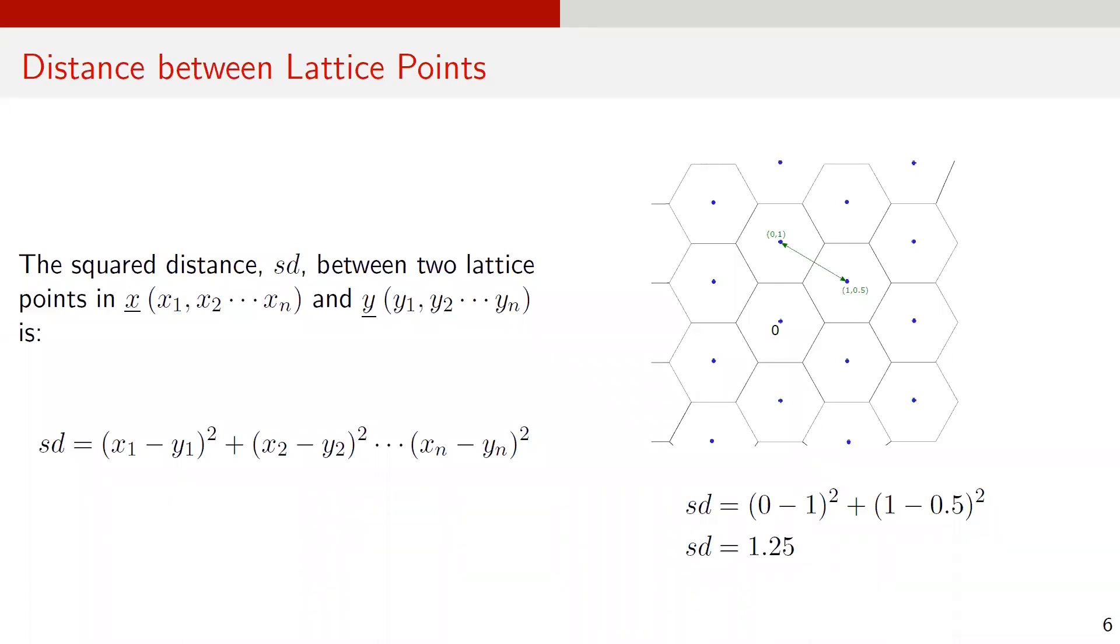Now let's discuss some of the definitions related to lattice codes. These definitions are important to understand various properties of lattice codes. The square distance between any two points in Euclidean space is summation of the squared values of the numerical difference of their coordinates. Suppose, in Euclidean space of dimension n, we have two lattice points X and Y. The square distance between X and Y is given as the summation of X sub 1 minus Y sub 1 whole squared plus X sub 2 minus Y sub 2 whole squared added up to X sub n minus Y sub n whole squared. Here is an example of a 2D lattice where vector X is 0, 1 and vector Y is 1, 0.5. The square distance between these two lattice points is 1.25 computed according to the formula.